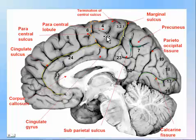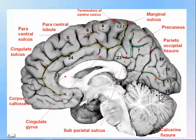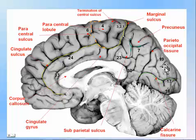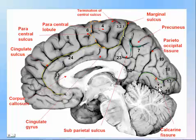The occipital lobe is a very small lobe, the part of the brain just above the cerebellum, separated from the parietal lobe by the parietal-occipital fissure. It constitutes the posterior fifth of the brain above the cerebellum.